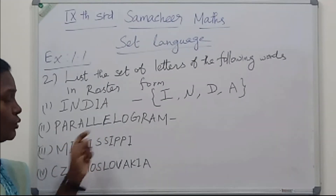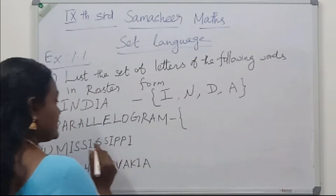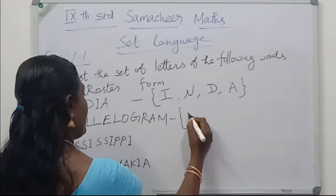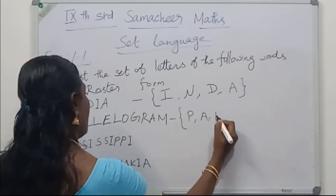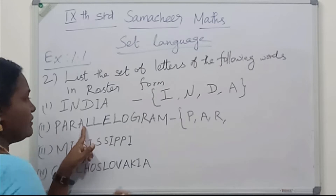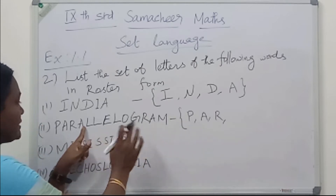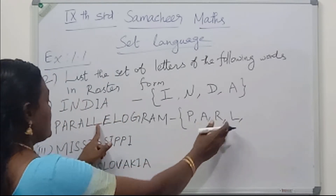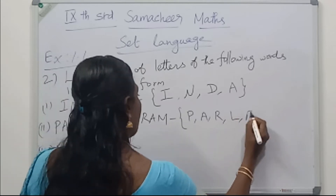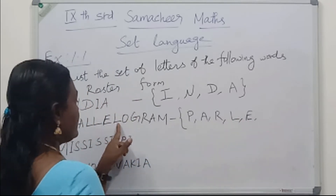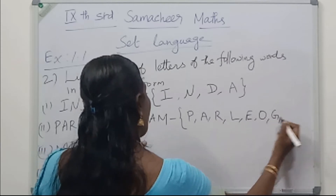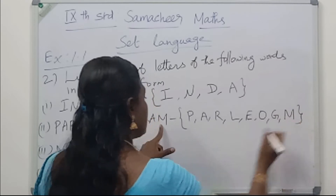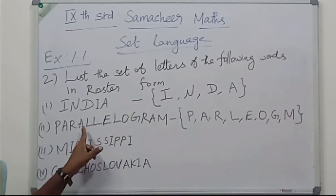See the 2nd word: 'parallelogram'. Writing the letters in roster form: P, A, R — the 4th letter A is already written, so we skip it. L is next, then another L which is already written, so we move on to E. Another L — can't write. Then O, G — R is already written, A is also there — and M. So the roster form is {P, A, R, L, E, O, G, M}.